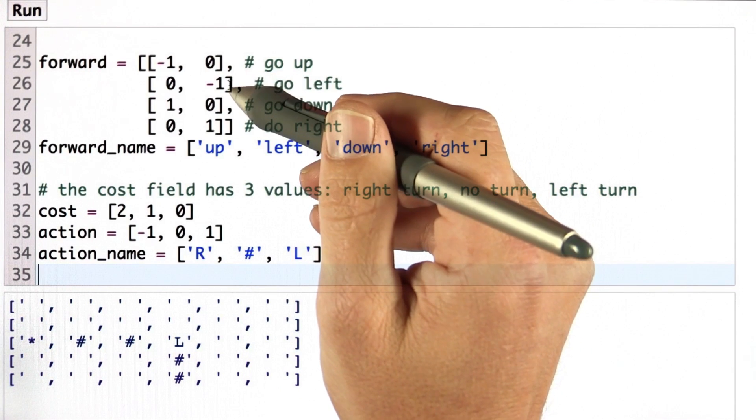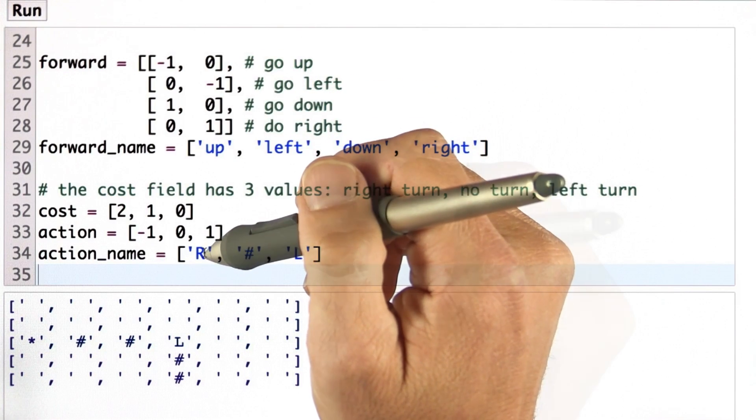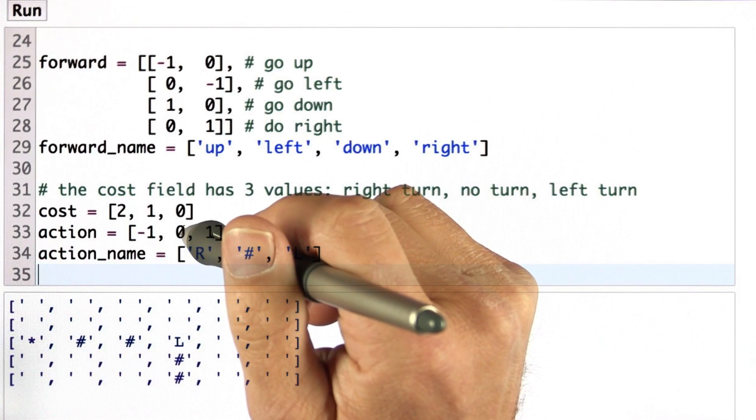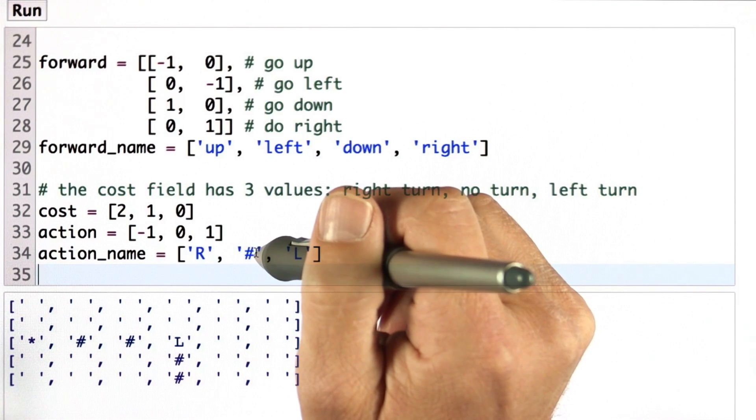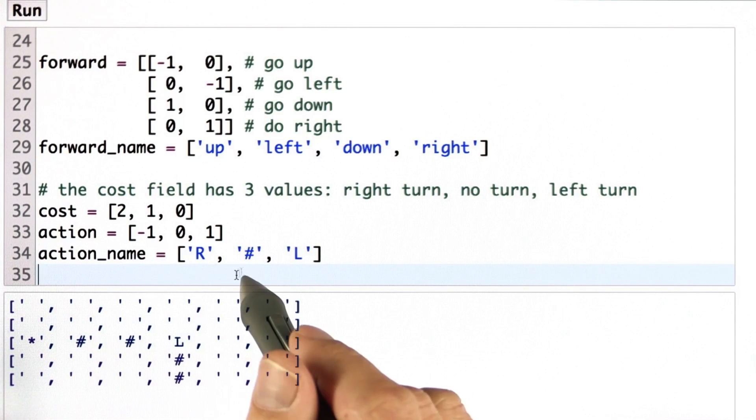For example, if we go from left to up, that's the same as turning right. If we add plus 1, that's the same as turning left. If we leave the orientation unchanged, then we go straight, which is indicated by this hash symbol over here.